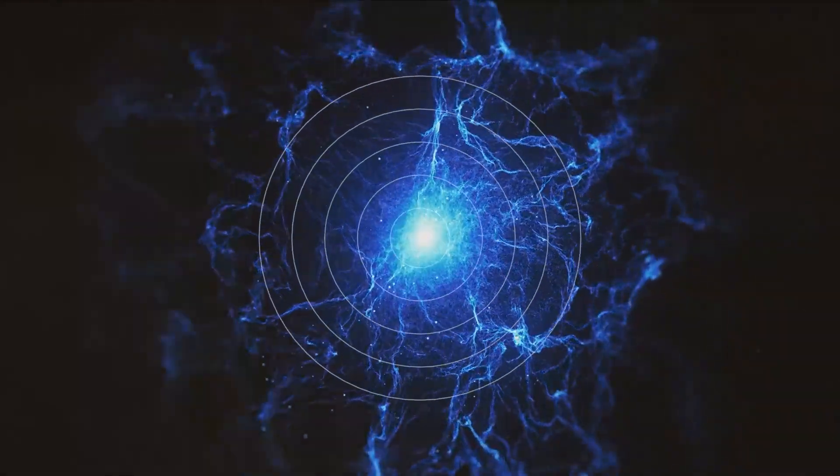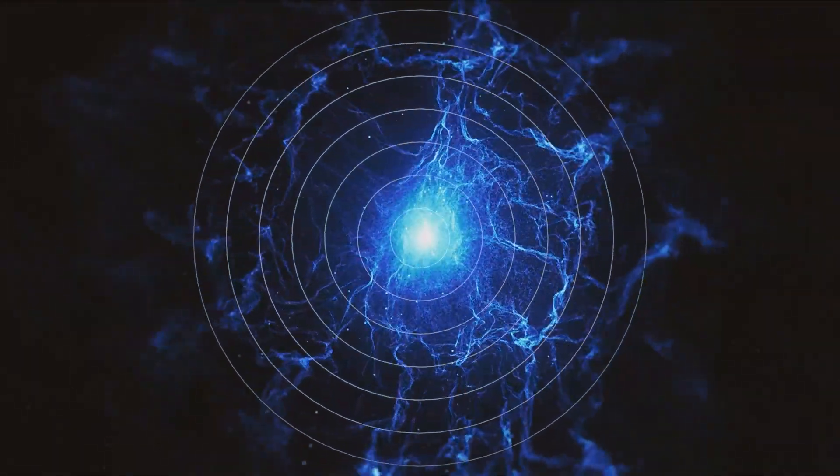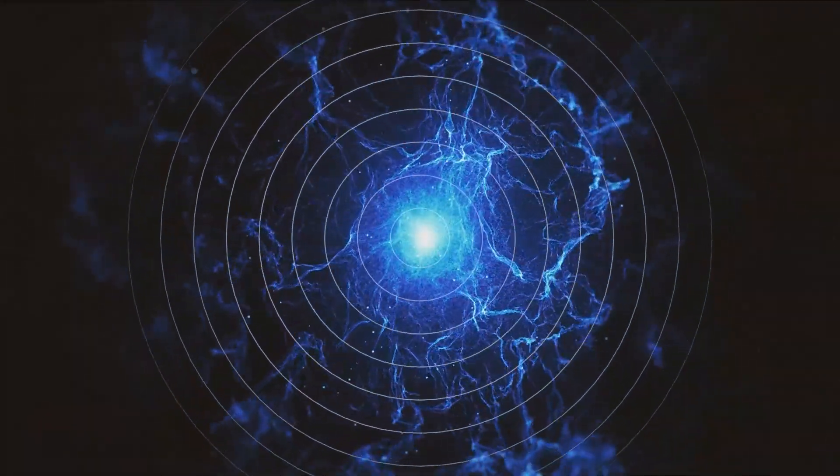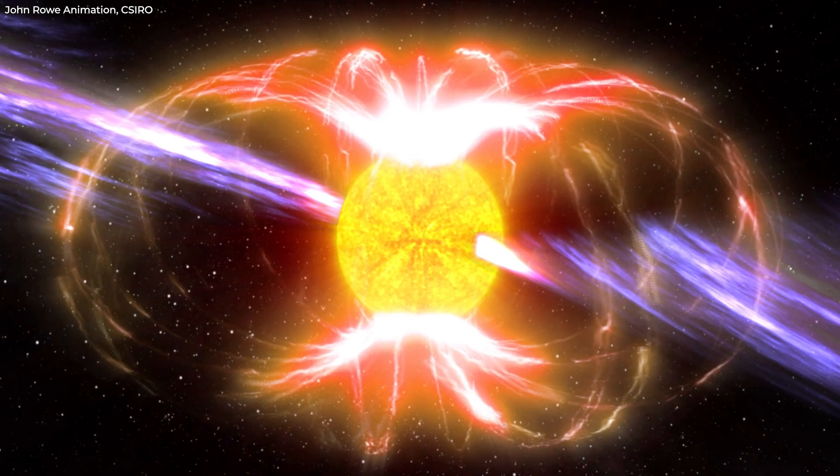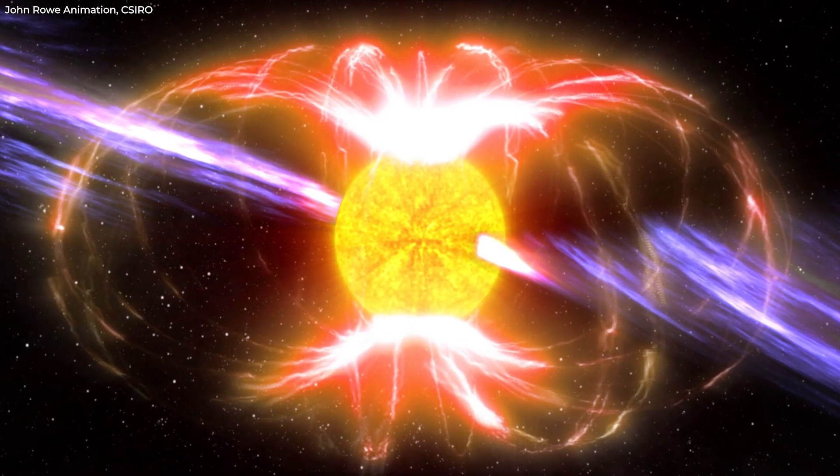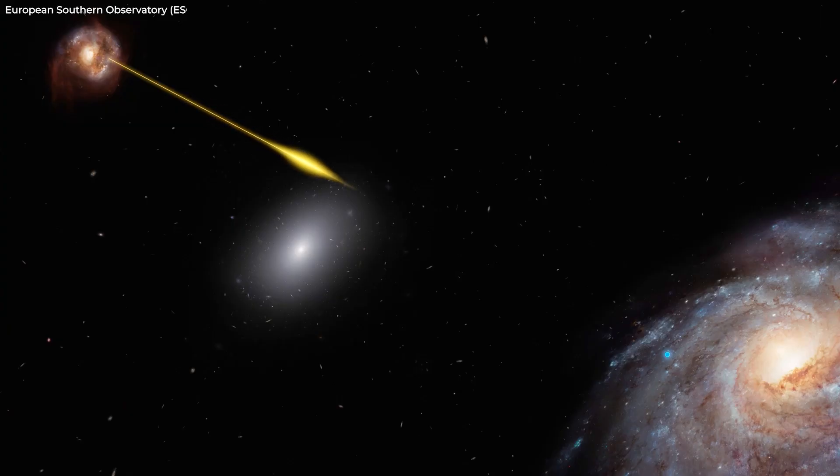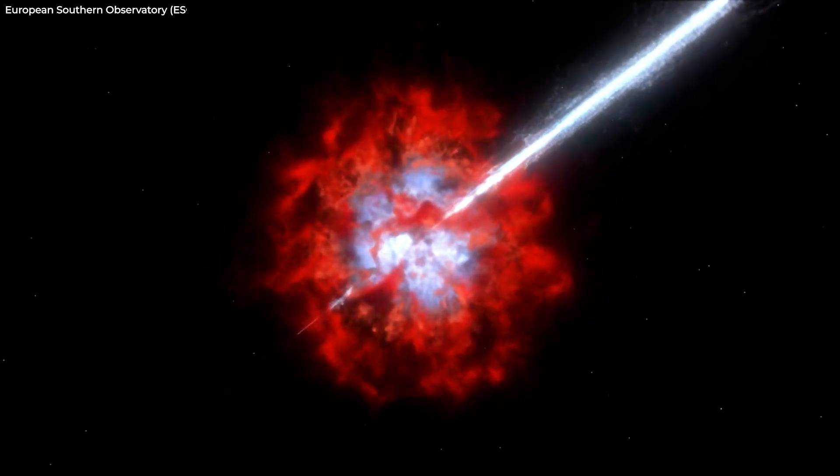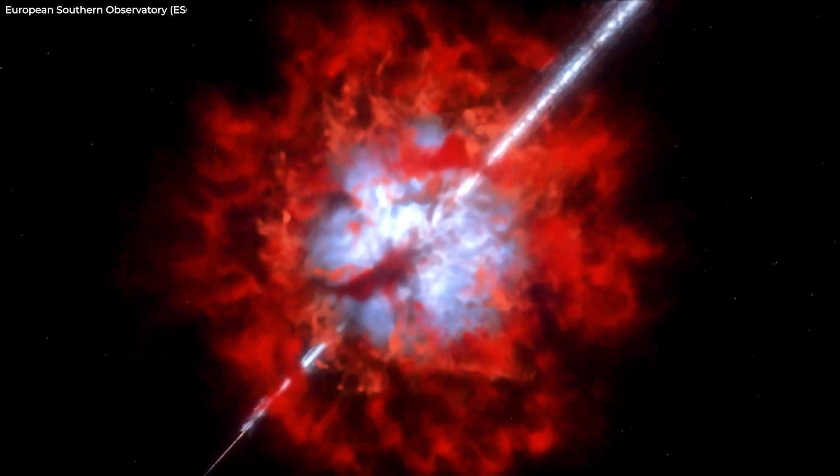The fact that GPM J1839-10 has been active for a longer period of time than any other known magnetar adds even more mystery to the situation. This one appears to have been going strong for nearly 35 years, although most only go through a phase of generating radio waves that last a few months to years until they fade out.